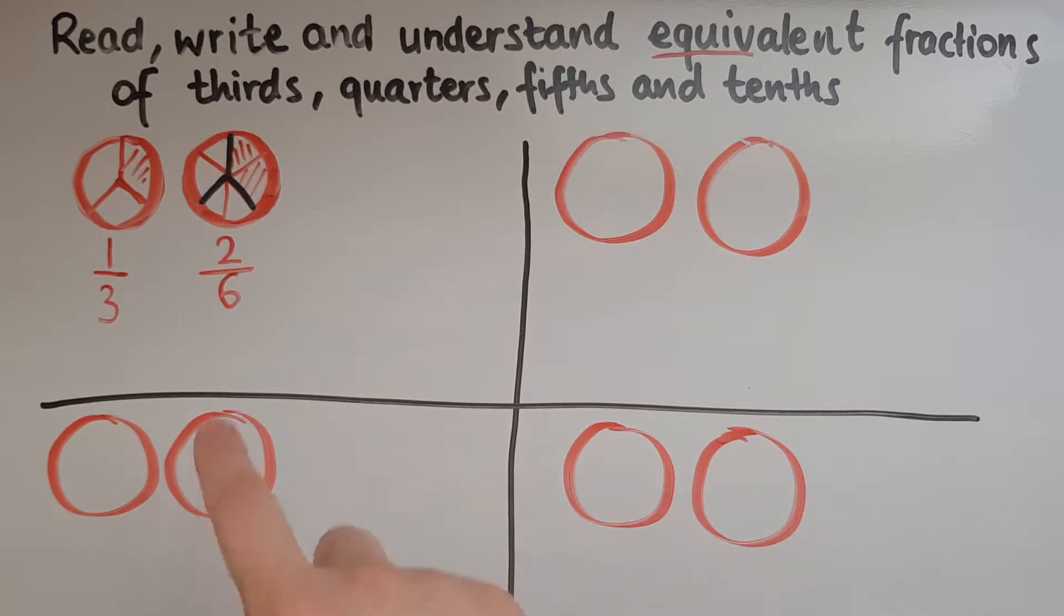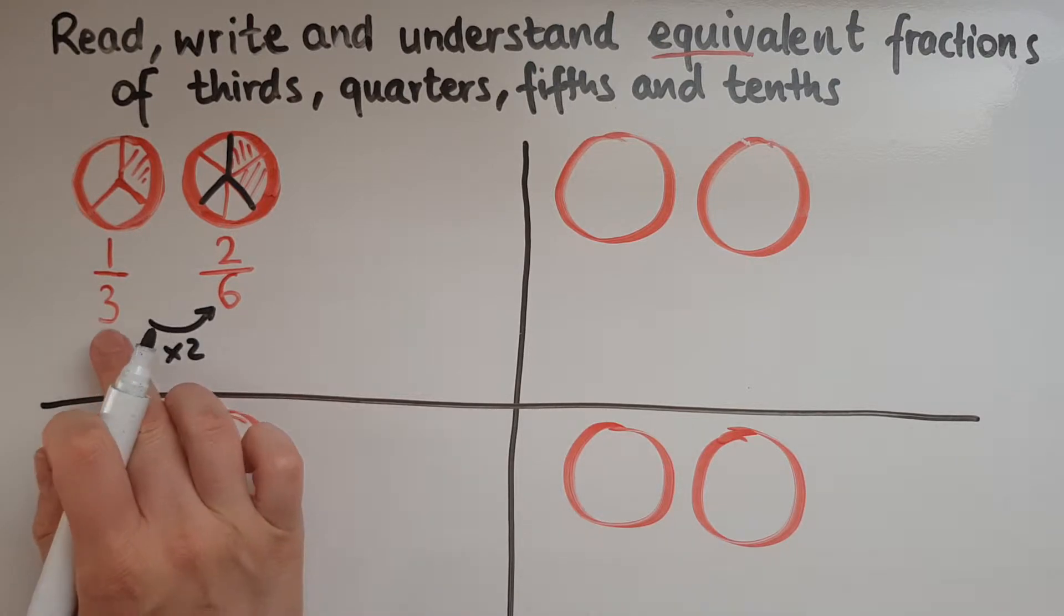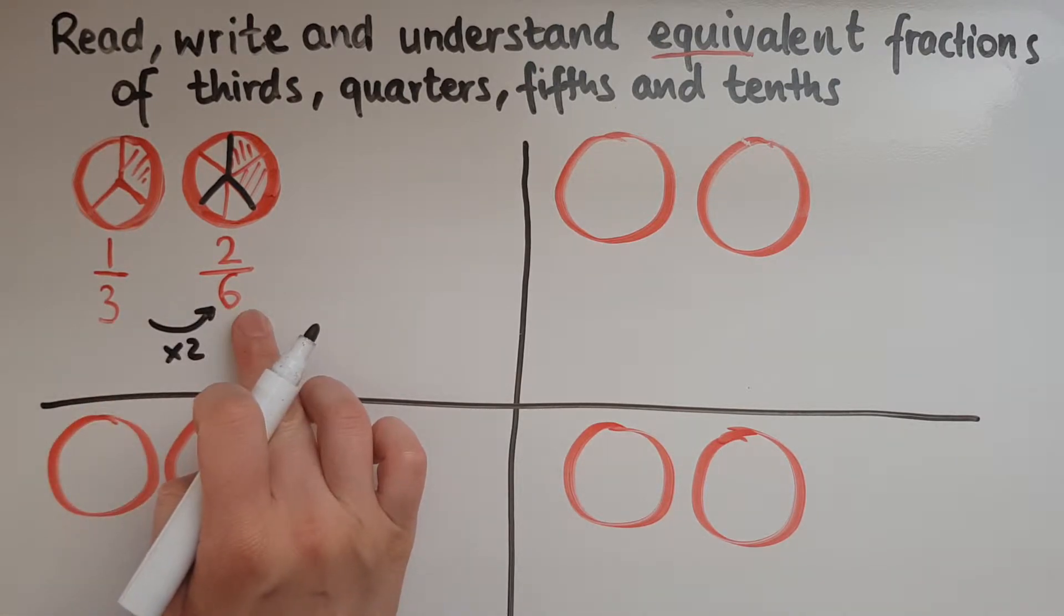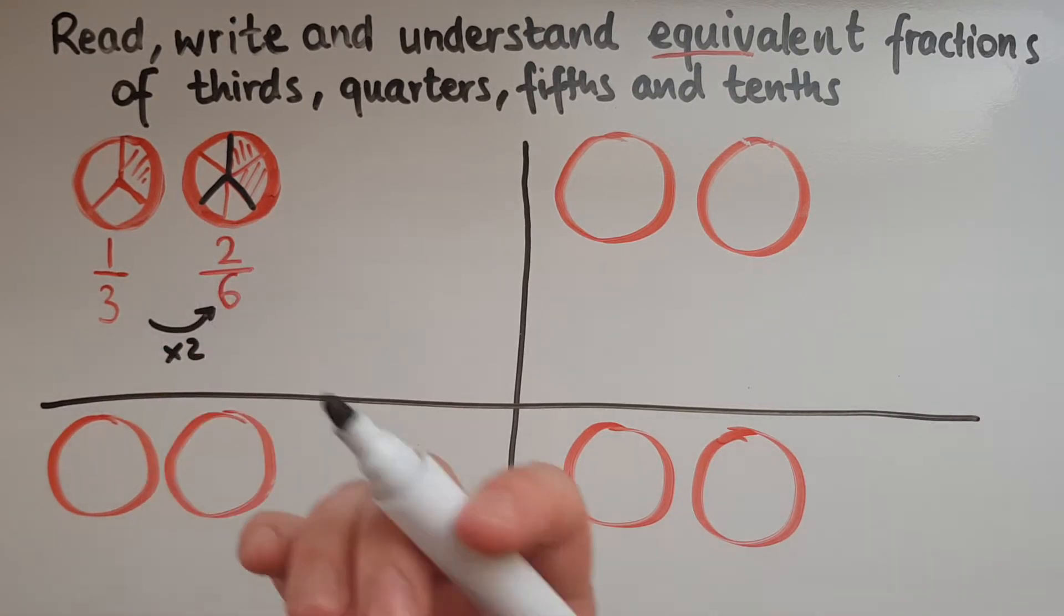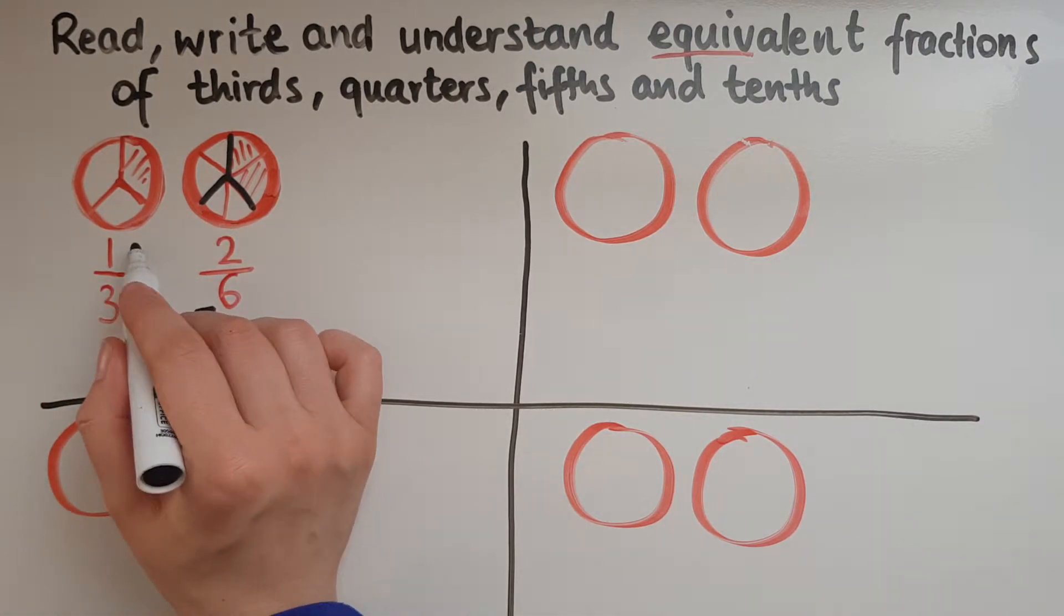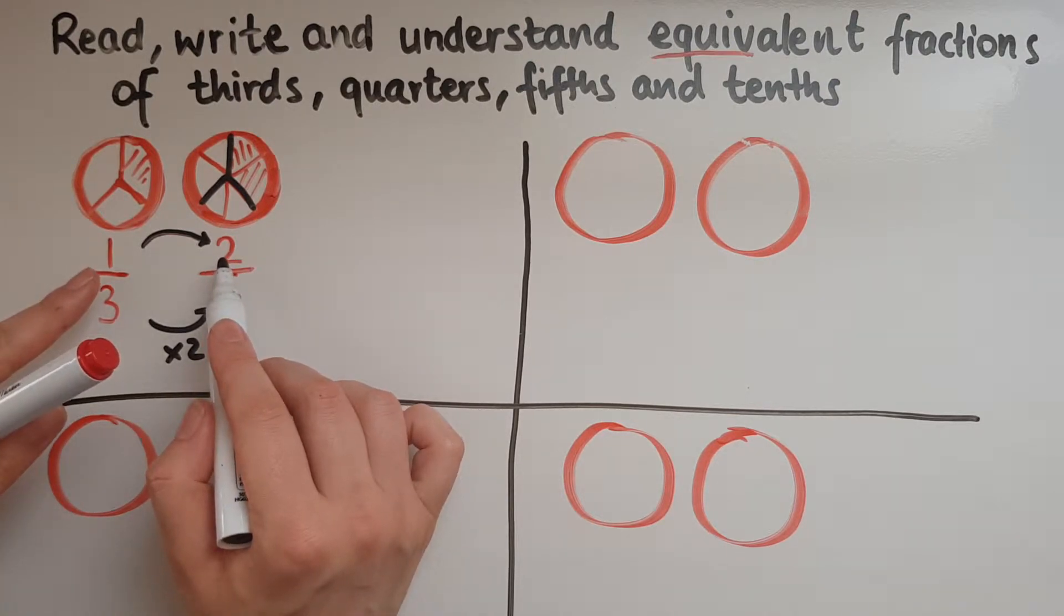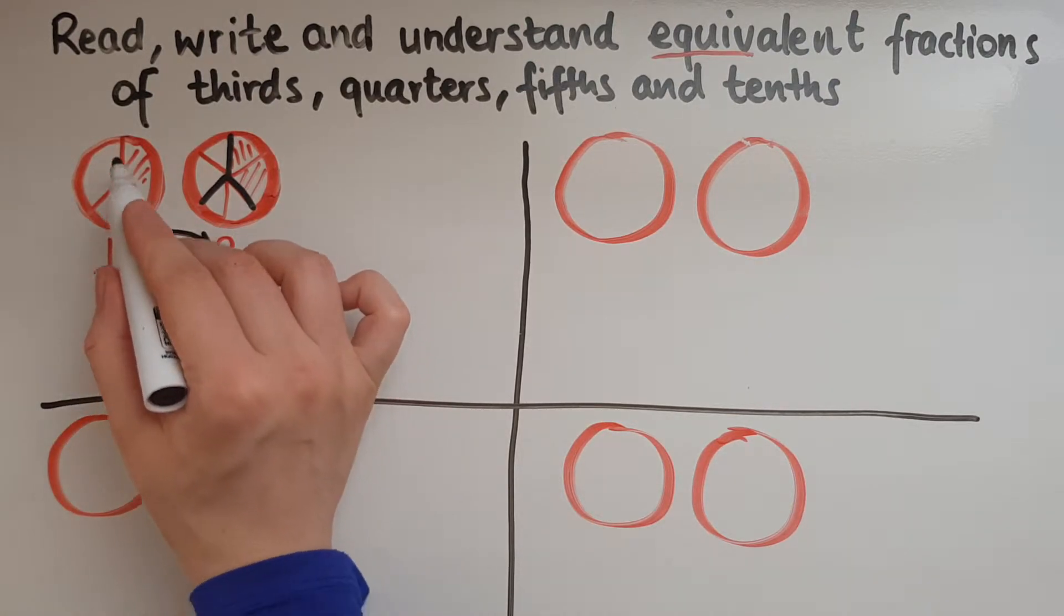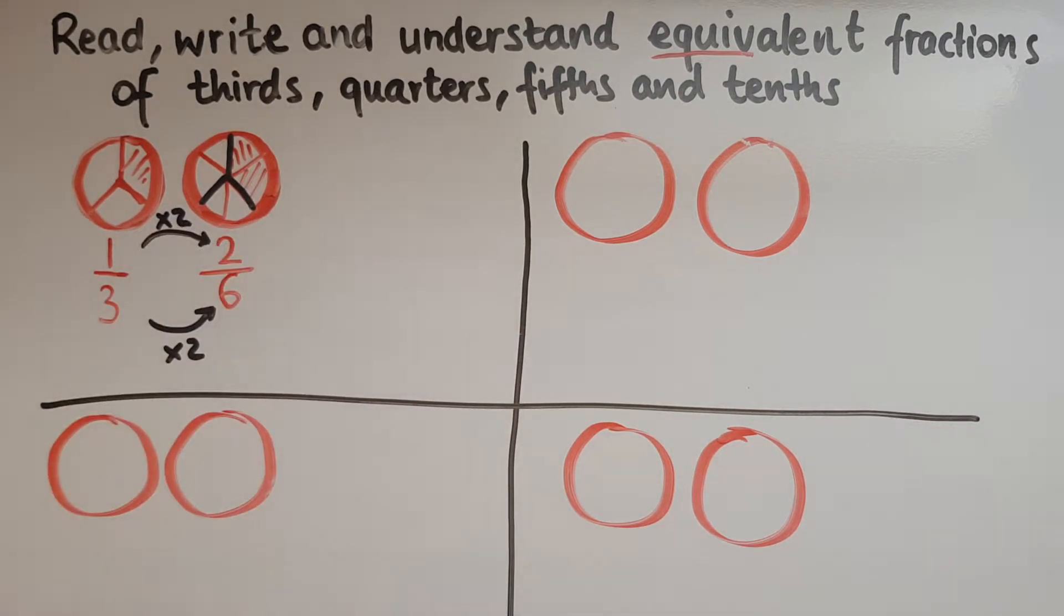So what has happened to the number of slices? The number of slices has doubled. It was three, it is now six, because these slices are much smaller. In terms of the overall amount, the size of the pizza, that hasn't changed. And what actually happens to the slices that we're talking about, it was one slice, that's equal to two now. So we double those as well. So we've got two sixths.